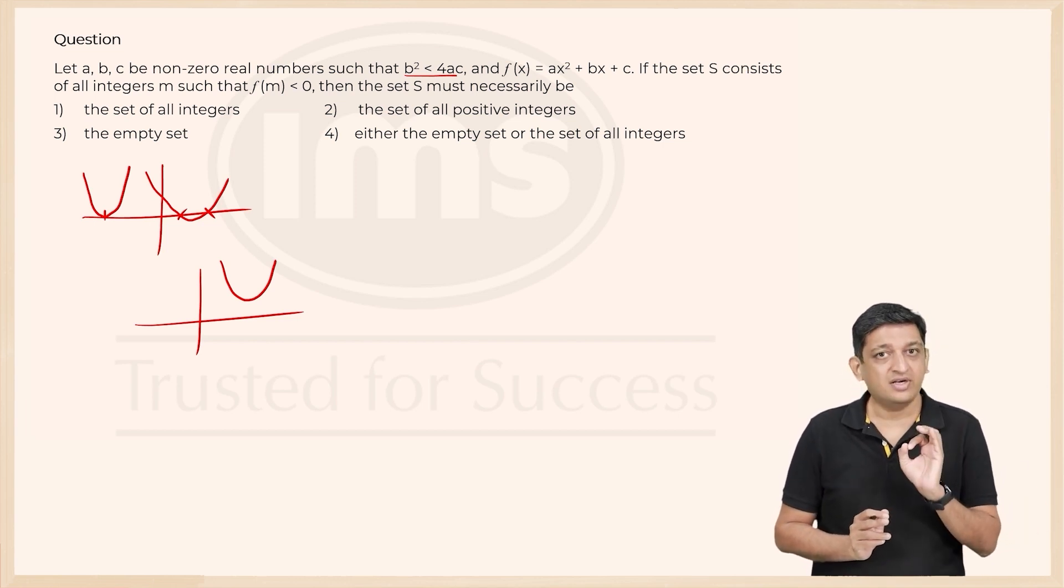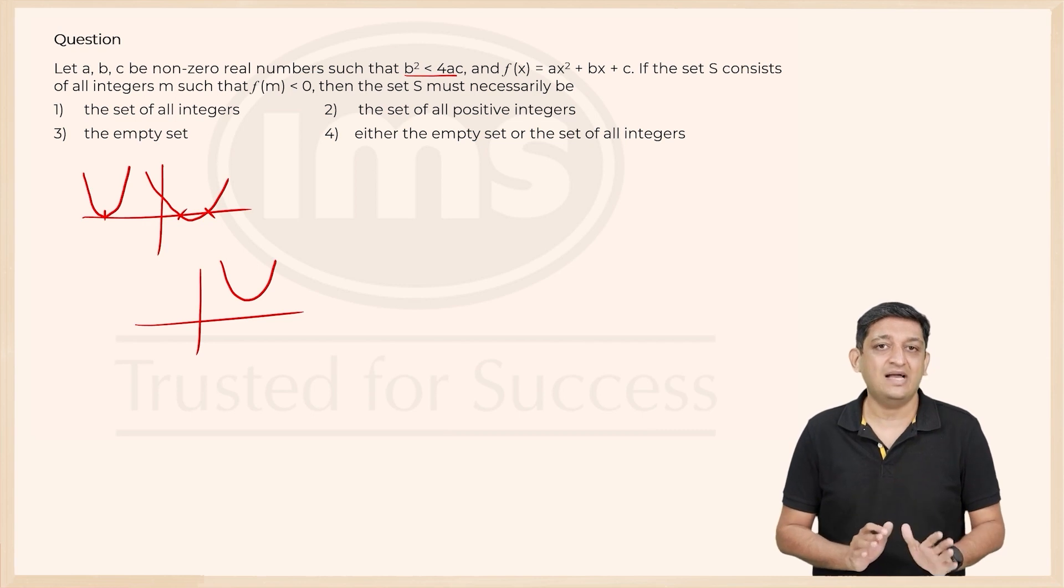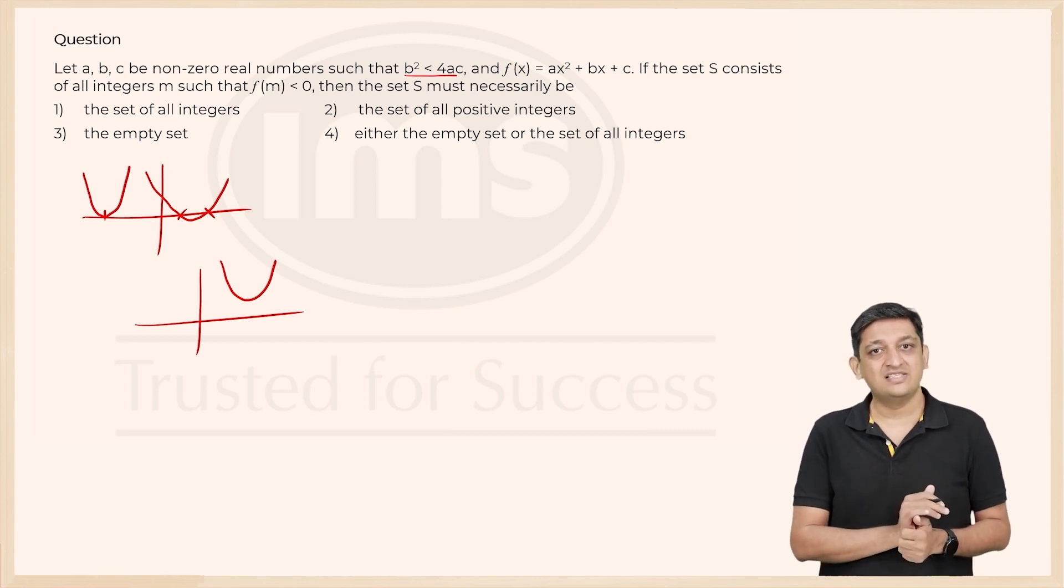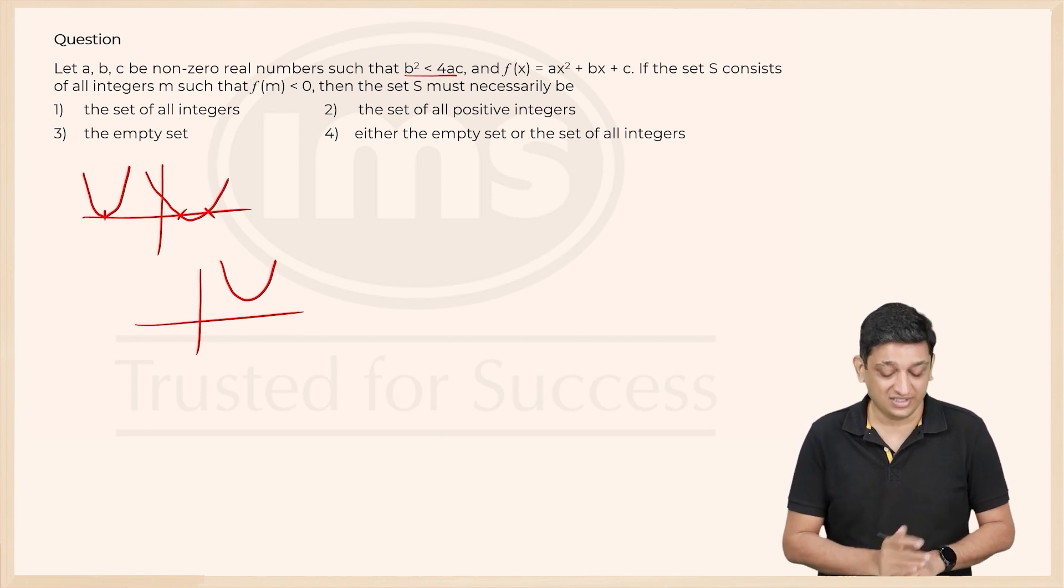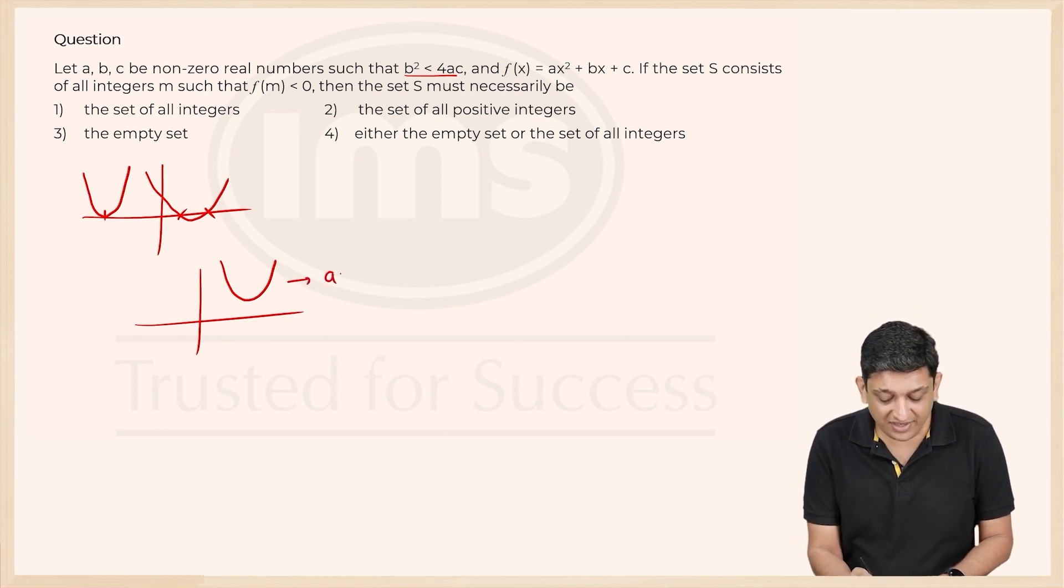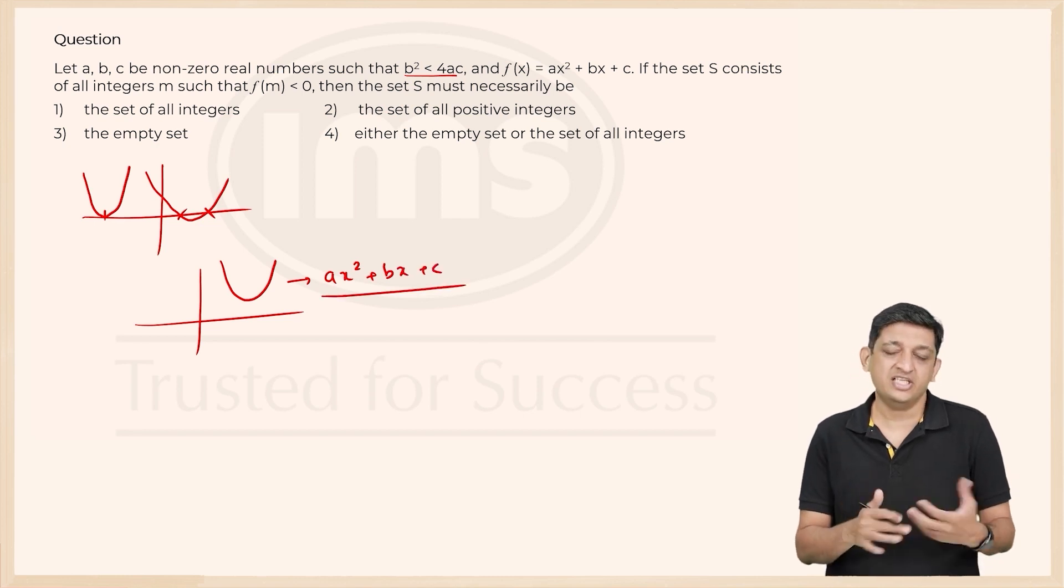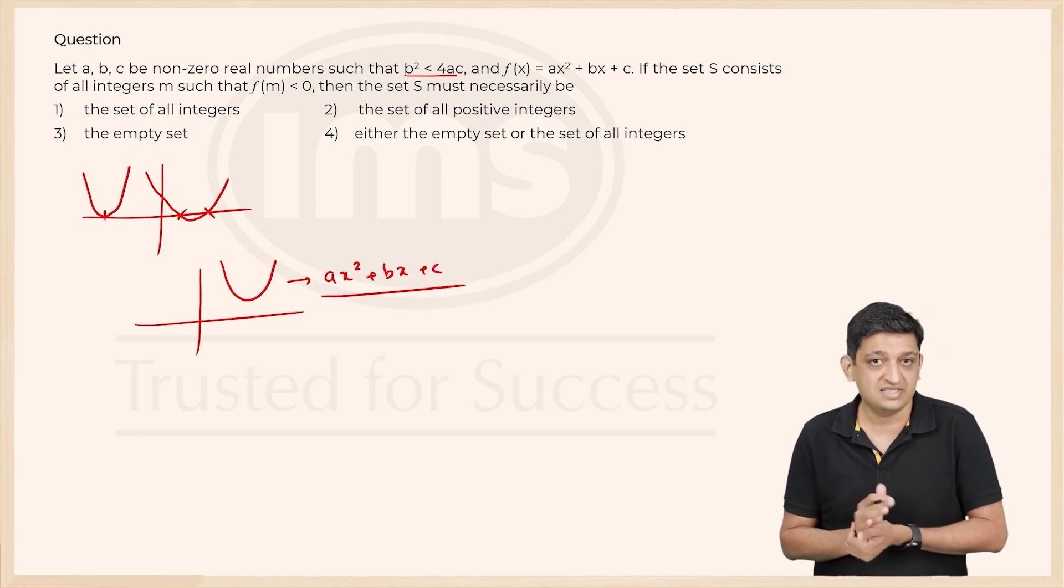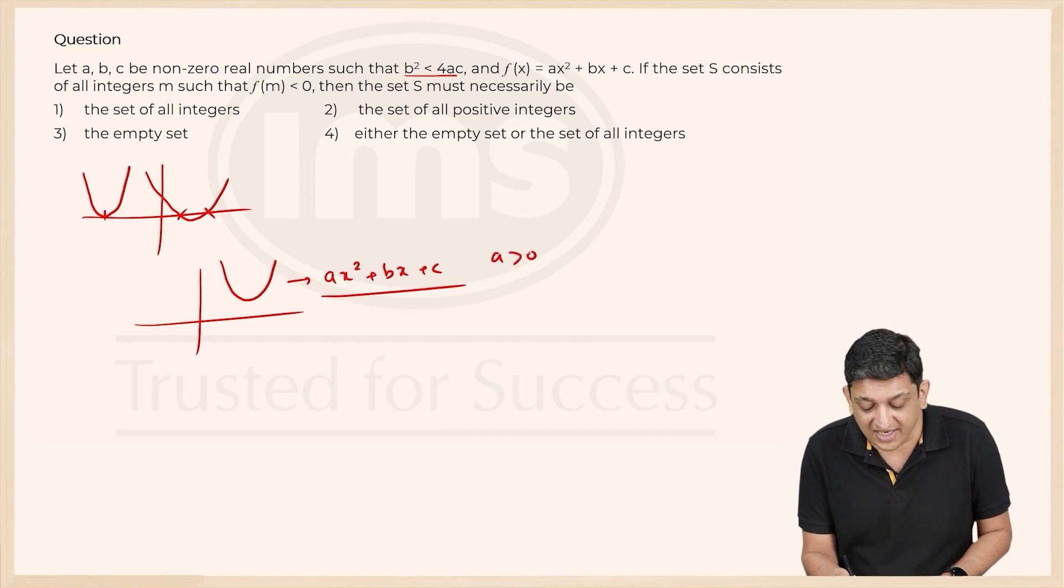Now one more thing you have to understand, and this is a very nice trap that has been set into this question. A lot of us only imagine these particular scenarios as I have drawn here. But this is basically when you have a quadratic equation ax² + bx + c or an expression ax² + bx + c where a is greater than 0.